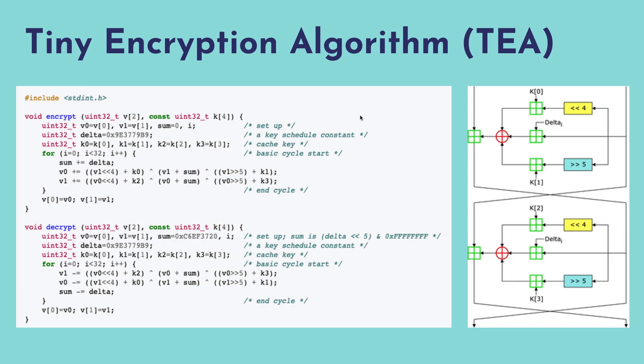And k0, k1, k2, k3 are the keys. Algorithm is basically doing shift left by 4 and right by 5 with a respective XOR function with a certain iteration.